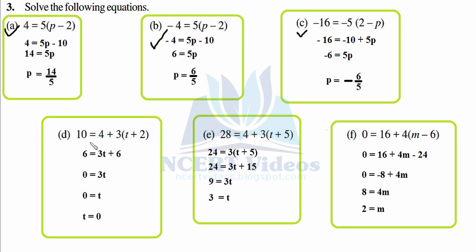Part d: 10 equals 4 plus 3 times (t plus 2). Transpose 4: 10 minus 4 is 6. Open the bracket: 6 equals 3t plus 6. Transpose 6: 6 minus 6 is 0 equals 3t. Divide both sides by 3 — 3 cancels — so t equals 0.